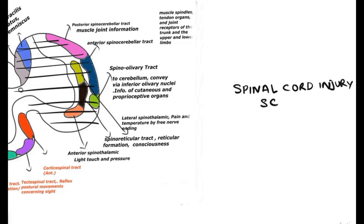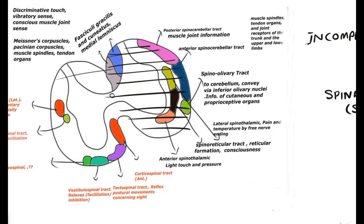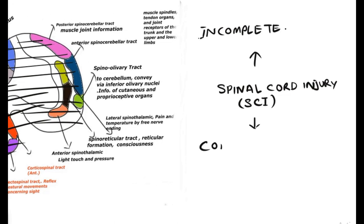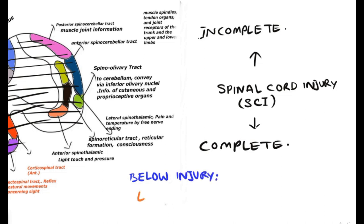Any partial lesion of the spinal cord is known as incomplete, and a complete transection of the spinal cord, or complete lesion, is known as complete spinal cord injury. So injury is classified into two varieties: incomplete and complete.